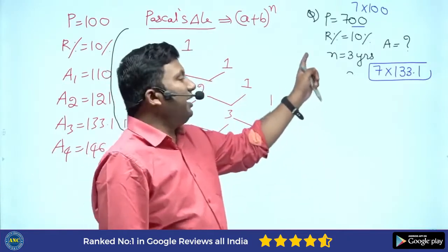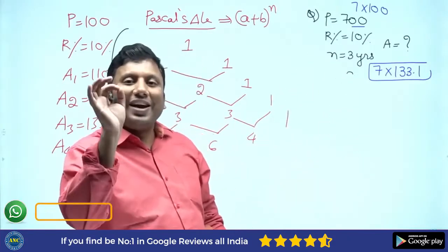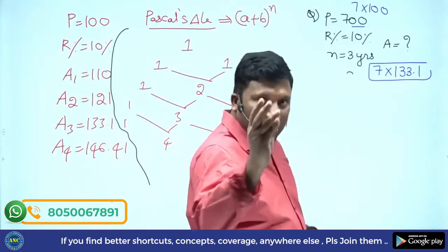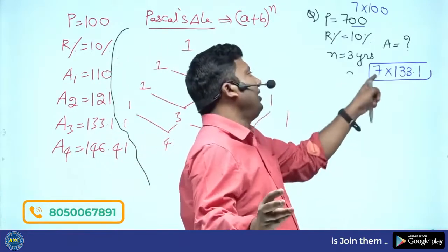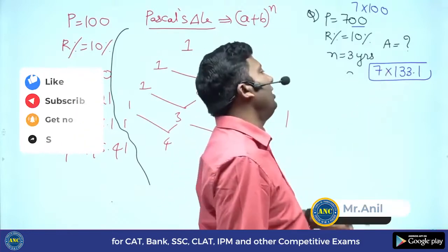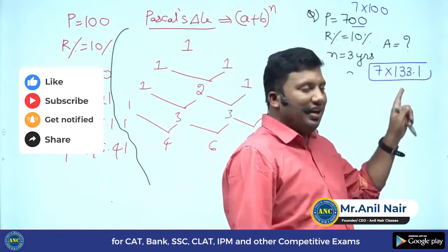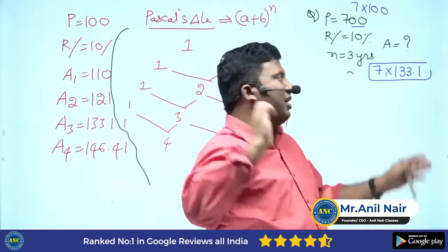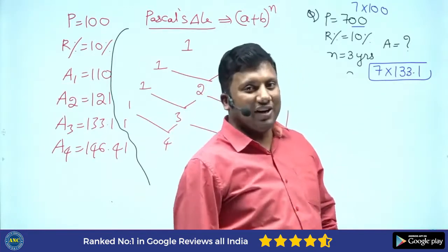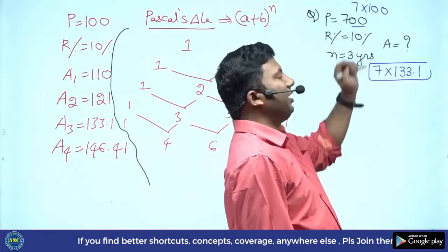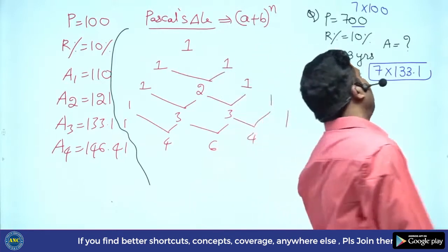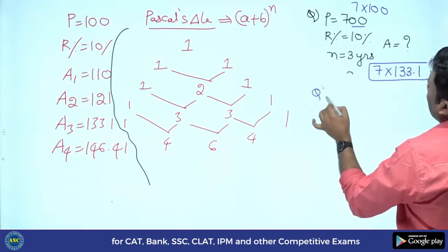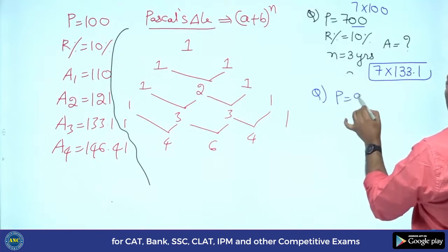Whenever you see N equal to 3 years, write down the coefficients of (a + b) power n. The coefficients are: a cubed → 1, 3a squared b → 3, 3ab squared → 3, b cubed → 1. Put a decimal point — it has to be 133.1 because that change is 10 percentage.